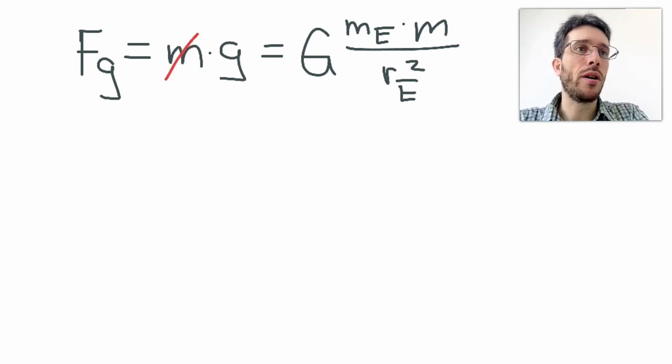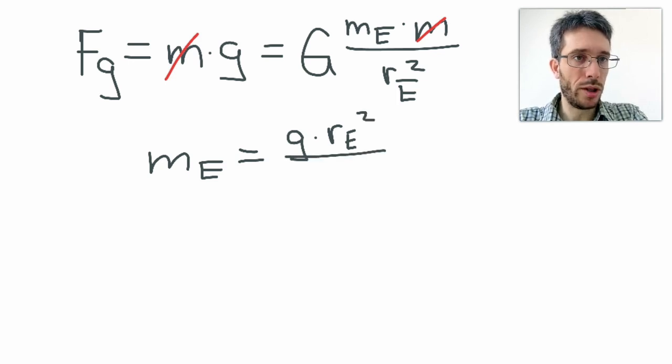The mass of the object actually falls out, and I can solve this for the mass of the Earth. So the mass of the Earth, therefore, must be equal to g times radius of the Earth squared over capital G.